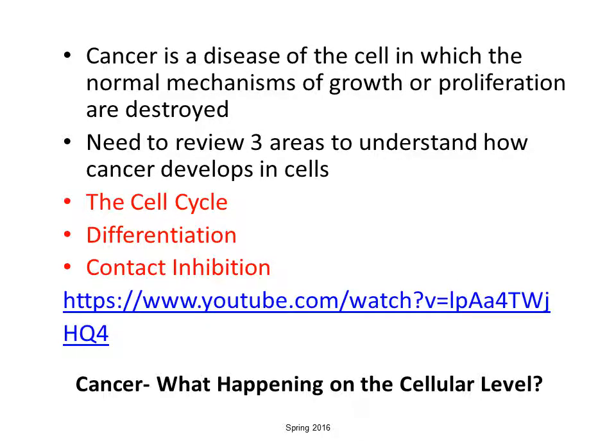Your book defines cancer as a disease of the cell in which the normal mechanisms of growth or proliferation are destroyed. So I need all of you to put on your thinking caps and go back to anatomy and physiology, because we have to go back to the cell cycle and how a normal cell usually behaves. There's a video we're going to show in class, but I included it here because it's a little review of how cells work.